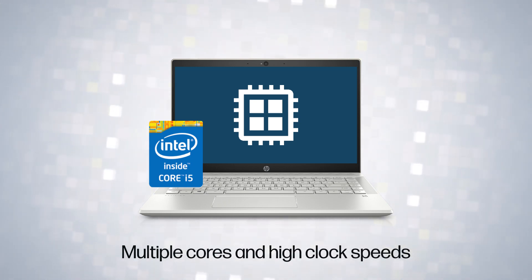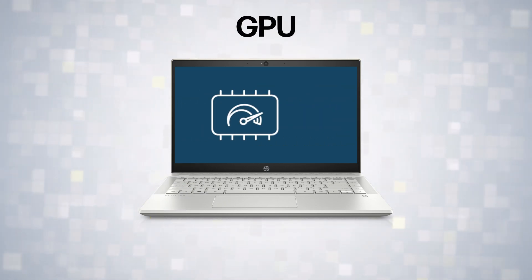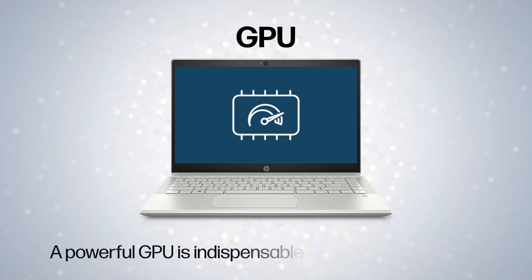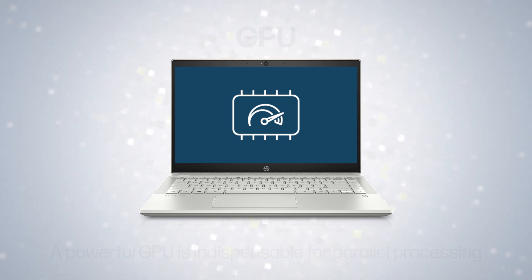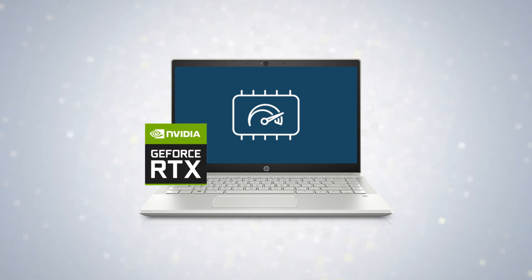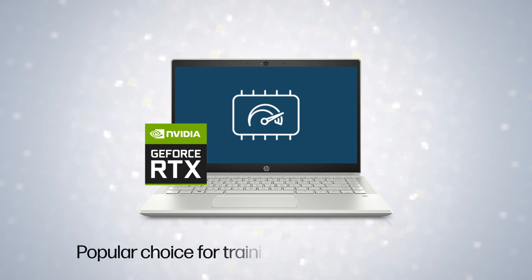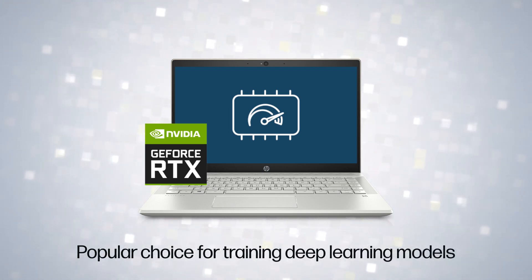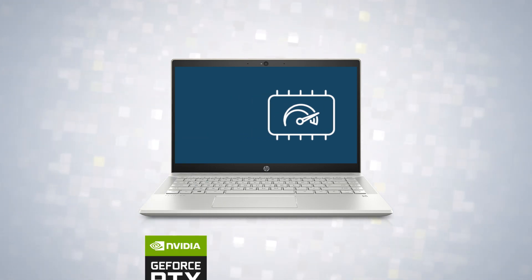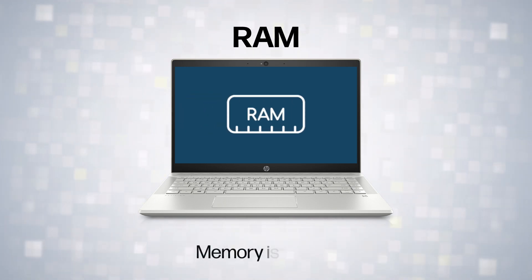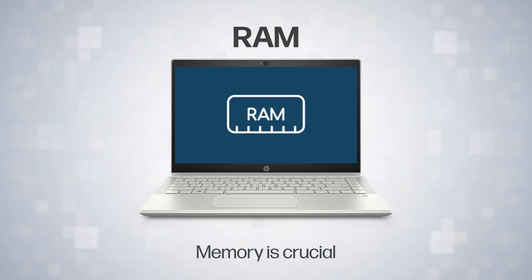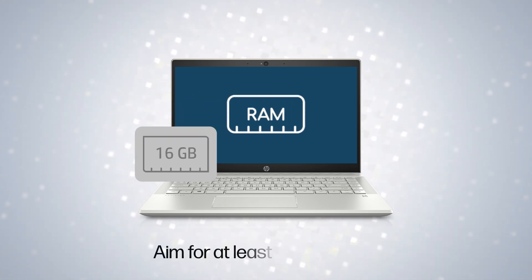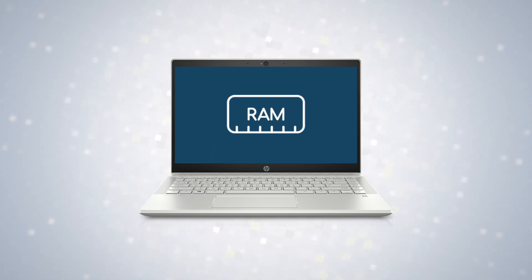A powerful GPU is indispensable for parallel processing. Nvidia's RTX series is a popular choice for training deep learning models. Memory is crucial as well — aim for at least 16 gigabytes of RAM, but consider 32 gigabytes or more for handling larger datasets and complex models.